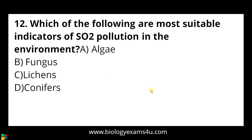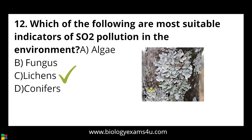Question number twelve: which of the following are most suitable indicators of SO2 pollution in the environment? a) Algae, b) fungus, c) lichens, d) conifers. The answer is lichens. Lichens are very sensitive to SO2 pollution — as SO2 concentration increases, lichens start disappearing. Bryophytes are also indicators of air pollution. In highly polluted cities, both lichens and bryophytes will be absent.